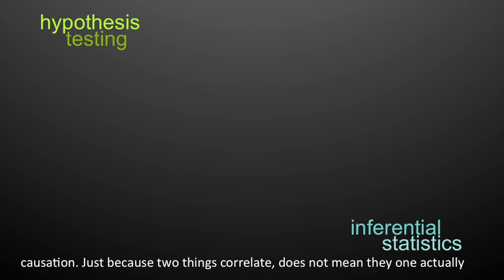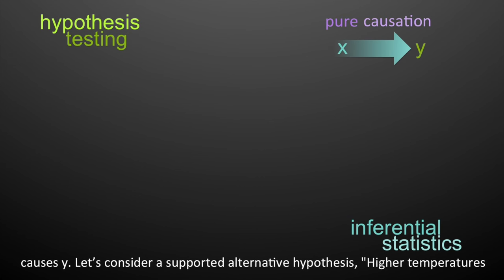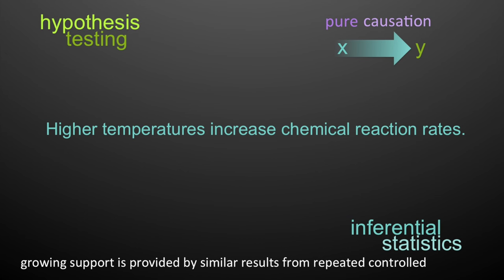While this may be true, scientists must be careful to separate correlation from causation. Just because two things correlate doesn't mean that one actually causes the other. When one treatment does cause an effect, this is known as pure causation — X causes Y. Determining pure causation is challenging, but growing support is provided by similar results from repeated controlled experiments.